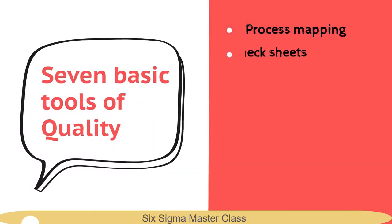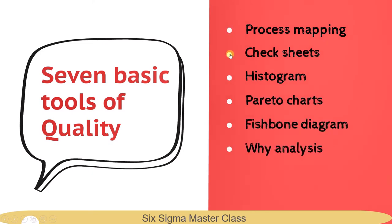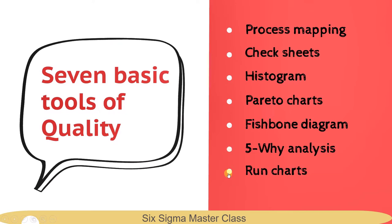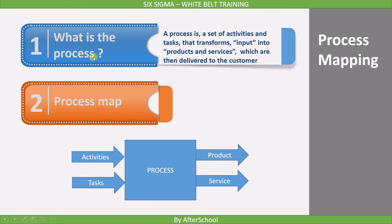These are the seven basic tools of quality. Let's first cover the process mapping tool in this lecture. To understand process mapping, we must first understand what a process is. A process is a set of activities and tasks that transforms input into products and services.